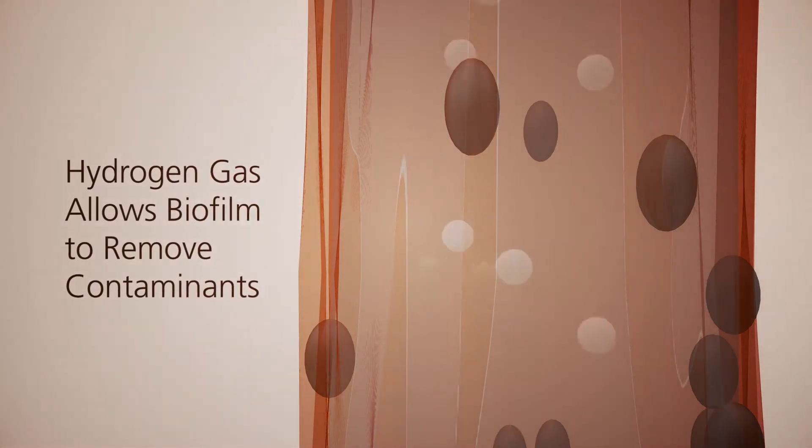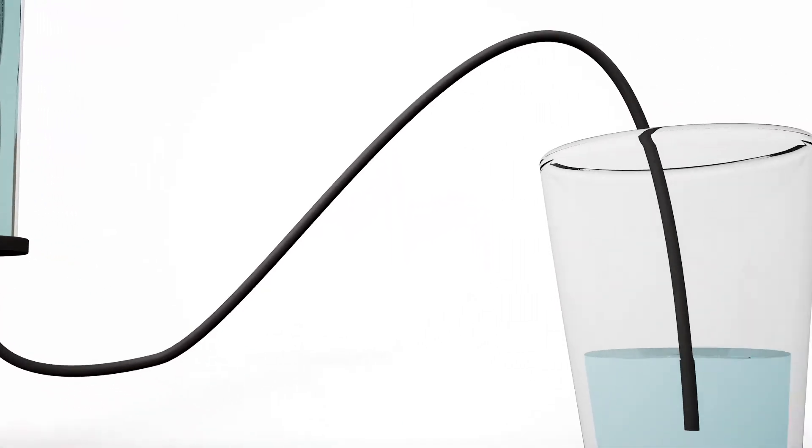And living on the outside of the straw, attached as a biofilm, they will oxidize it and then they will use the electrons they get from that to reduce the nitrate or the perchlorate or the selenate or one of the other oxidized contaminants.